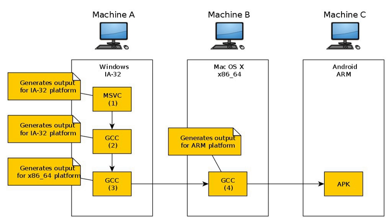PATH=/path/to/binutils/bin:$PATH make. Cross-compiling GCC requires that a portion of the target platform's C standard library be available on the host platform. The programmer may choose to compile the full C library, but this choice could be unreliable. The alternative is to use Newlib, which is a small C library containing only the most essential components required to compile C source code.